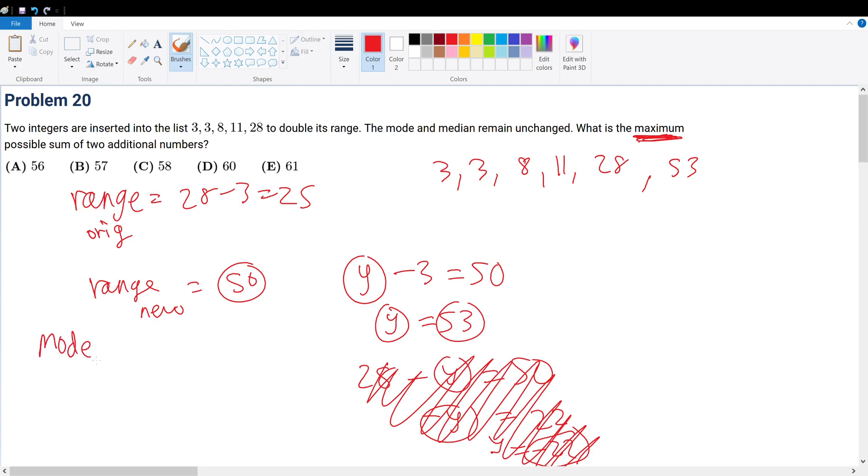The mode and median remain unchanged. What does that mean? Well, the mode is the number that occurs the most. Well, let's count them up. I have two 3s. I have one 8. I have one 11. I have one 28.